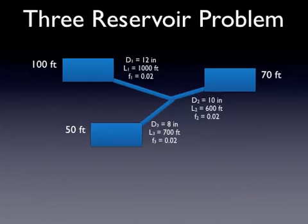Another thing I want to point out is, it's pretty obvious that water is flowing out of reservoir 1, and water is flowing into reservoir 3. So pipe 3, water is flowing from the junction into the reservoir. Pipe 1, it's flowing from the reservoir to the junction.